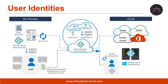Microsoft 365 uses the cloud-based user identity and authentication service Azure Active Directory to manage users. Choosing which identity management solution you're going to use for your on-premises and Microsoft 365 is an early decision that is one of the foundations of your cloud infrastructure, because changing this configuration later can be very difficult.